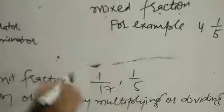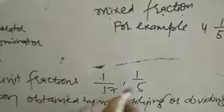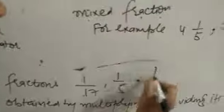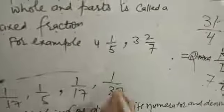Now there is one more type — fractions having 1 as the numerator. For example, 1 upon 17, 1 upon 5, 1 upon 37 — in all these, the numerator is 1. Fractions where the numerator is 1 are called unit fractions.